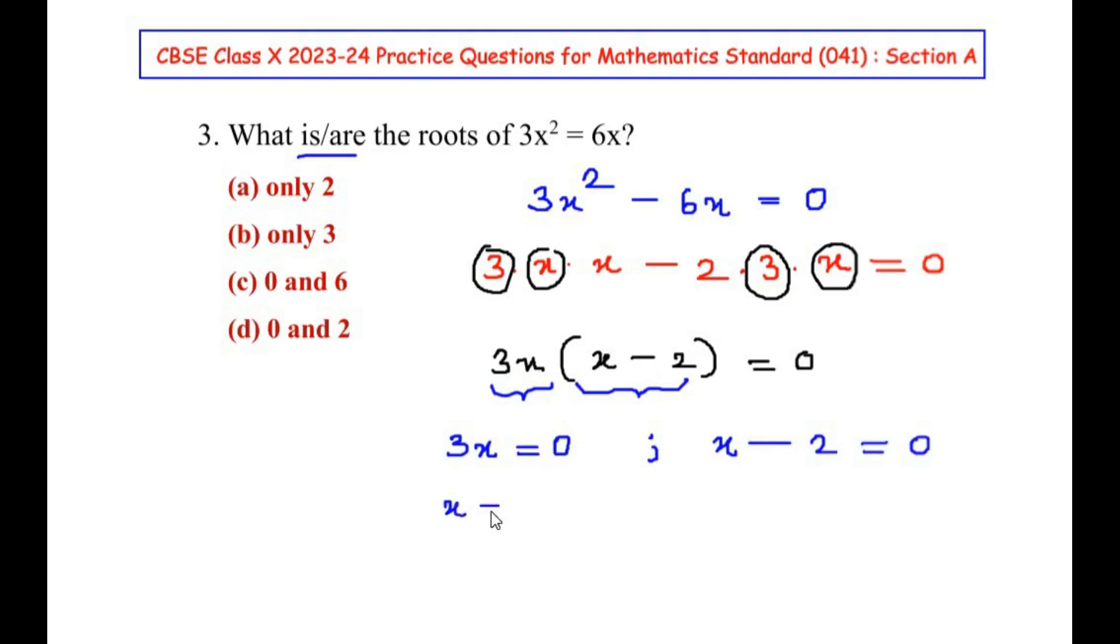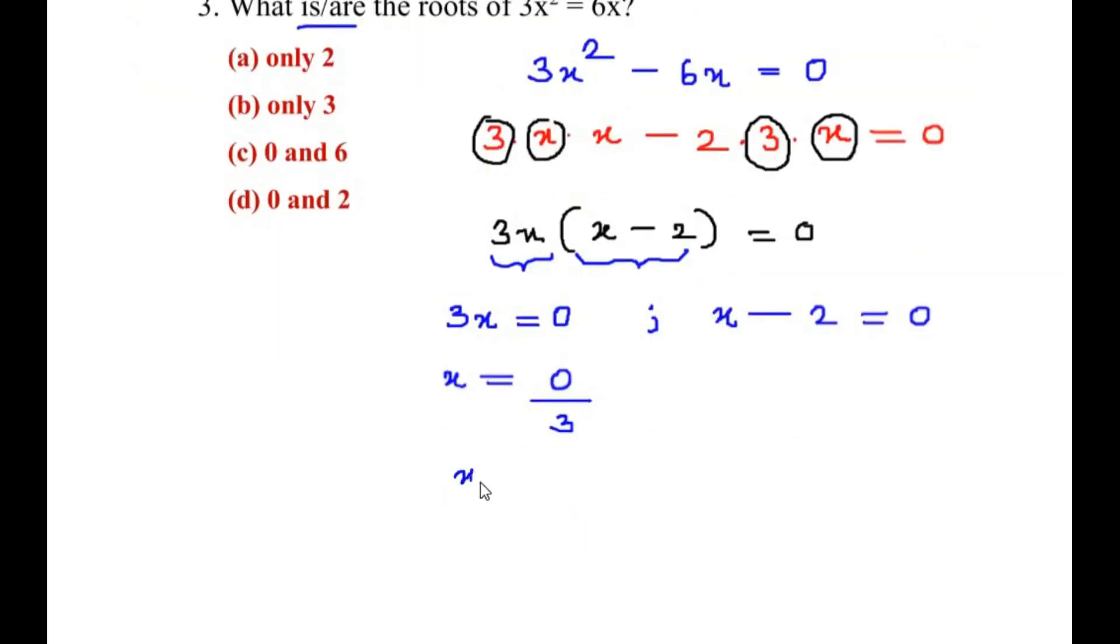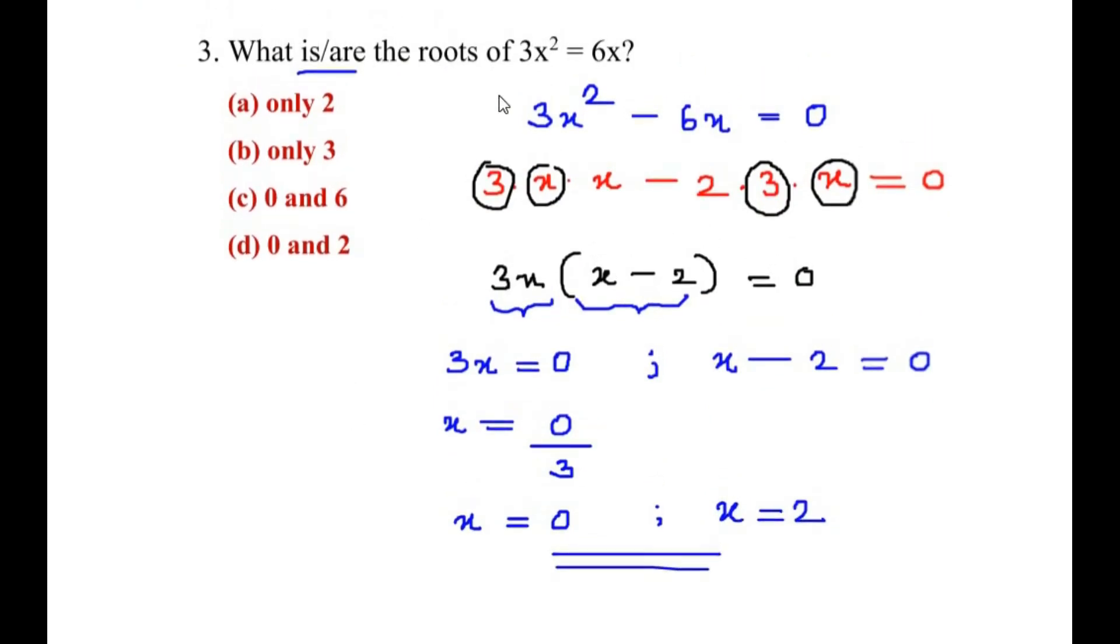From 3x = 0, we get x = 0/3, so x = 0 is the first value. And from x - 2 = 0, we get x = 2, taking the -2 on the other side. So we have two roots: 0 and 2, which is option (d).